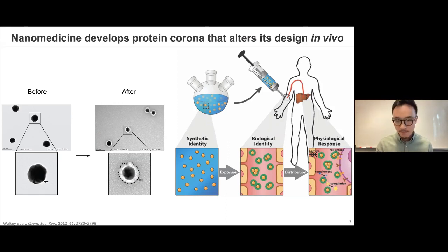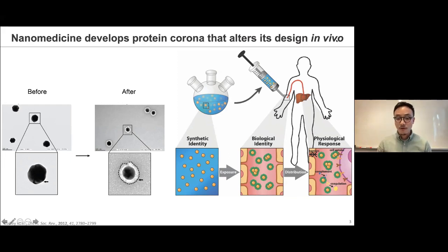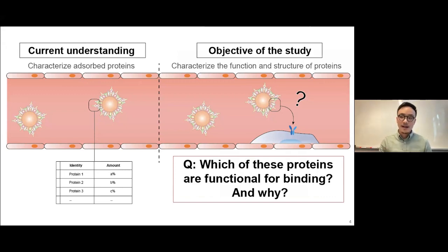This becomes an issue because the very surface we designed for our nanomedicines gets modified by the body. We start with a synthetic identity — the functions we want our nanomaterials to perform — but that gets changed into a biological identity determined by the proteins on its surface, leading our nanomaterials to different receptors or different biochemical cascades. Many studies have tried to understand what these proteins are, characterizing different materials and identifying which proteins adsorb on their surfaces, including their identities and amounts.